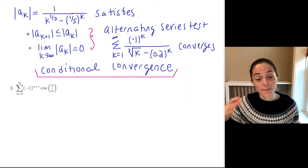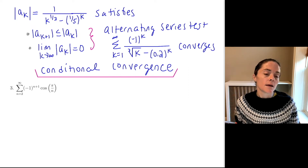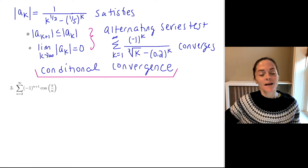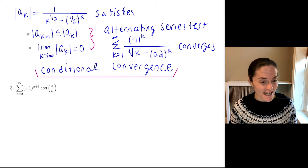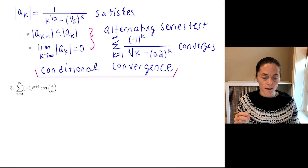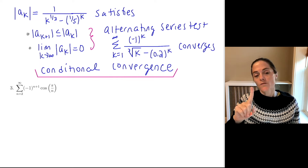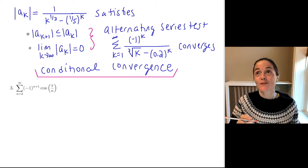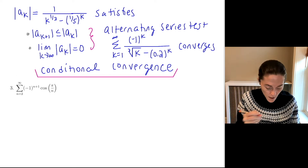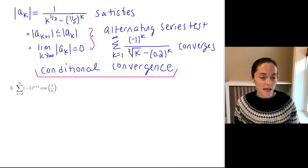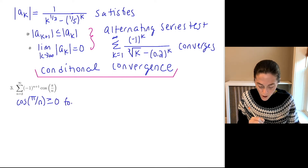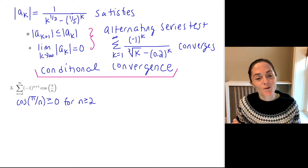Number three: we have minus 1 to the n times cosine of pi over n. You might wonder if this is even alternating because cosine can be both positive and negative. Minus 1 to the n is certainly an alternating part. But notice that cosine of pi over n, starting at n equals 2 — cosine of pi over 2 is 0, then for n equals 3, 4, 5, etc., we are in quadrant 1 evaluating the cosine. So cosine of pi over n is always non-negative for n greater than or equal to 2 because we are in quadrant 1.